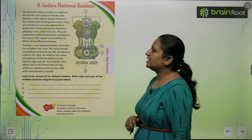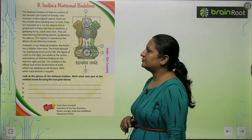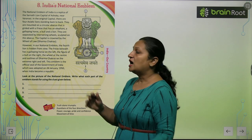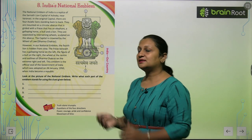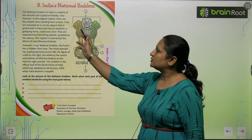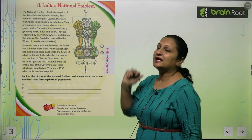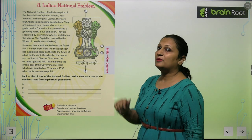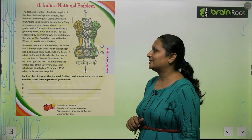However, in our national emblem, the 4th lion is hidden from view. If you look from the front, you can only see 3 lions — one lion is hidden at the back.